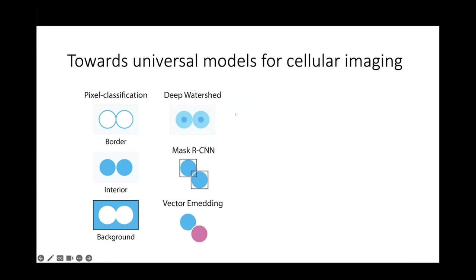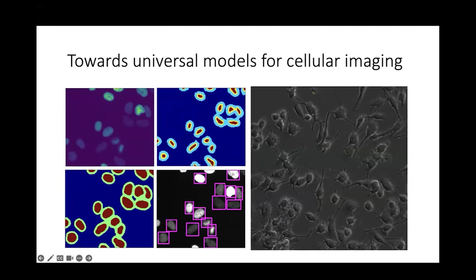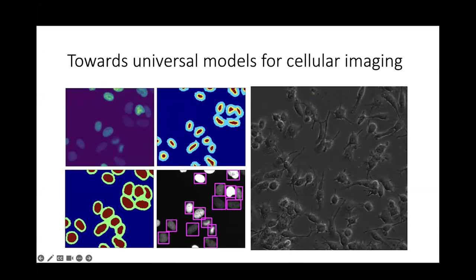Looking at cell image analysis methods more broadly, the way in which they differ most is in how they represent the idea of what's a cell. Different representations include the interior-border-background pixel representation from the original U-Net paper, as well as the deep watershed representations used in our work. Different methods choose representations best suited for a given dataset, but this poses a challenge to creating universal models. Moreover, there are challenges innate to this representation engineering — for example, overlapping cells, which are common in live cell imaging, cannot be handled by representations that require each pixel to be uniquely assigned to a cell.